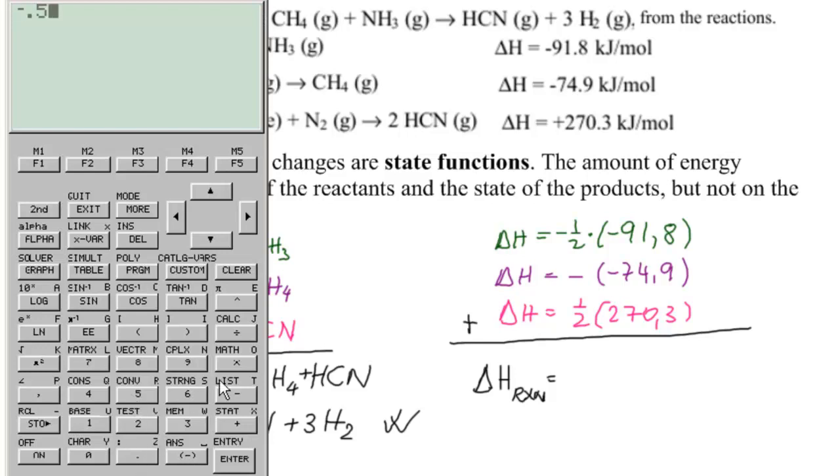Minus 0.5 times minus 91.8 minus, and then that's going to be times minus again. So let's erase that minus and put in a plus 74.9, and then we have plus 0.5 times 270.3.